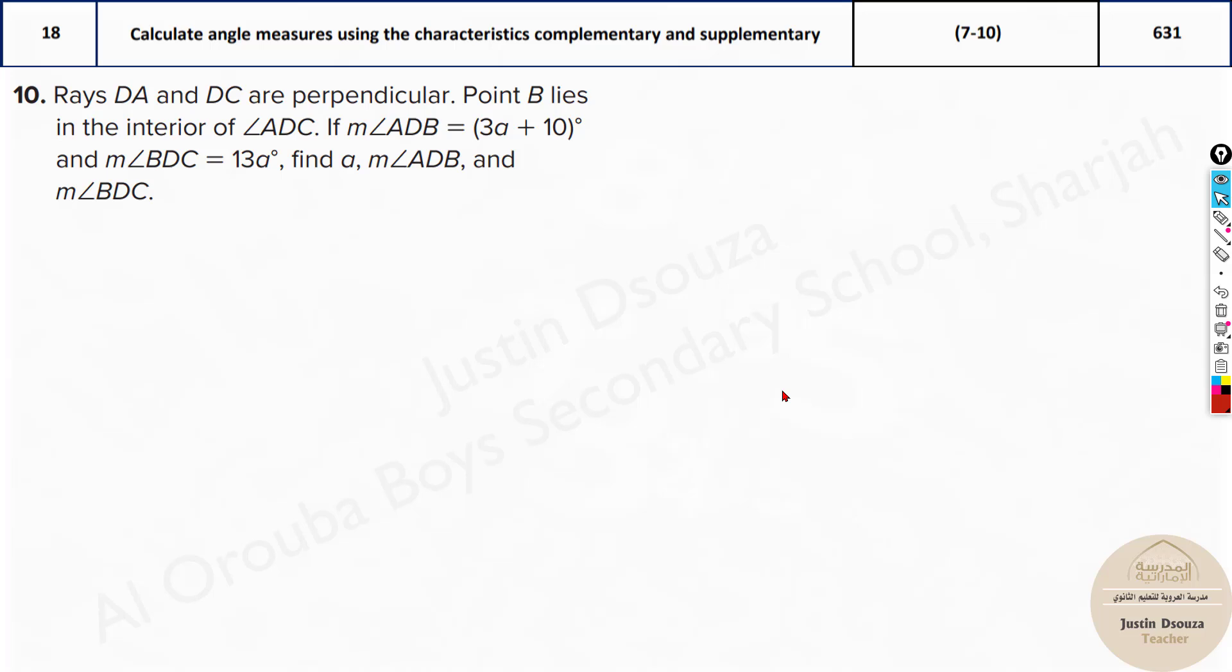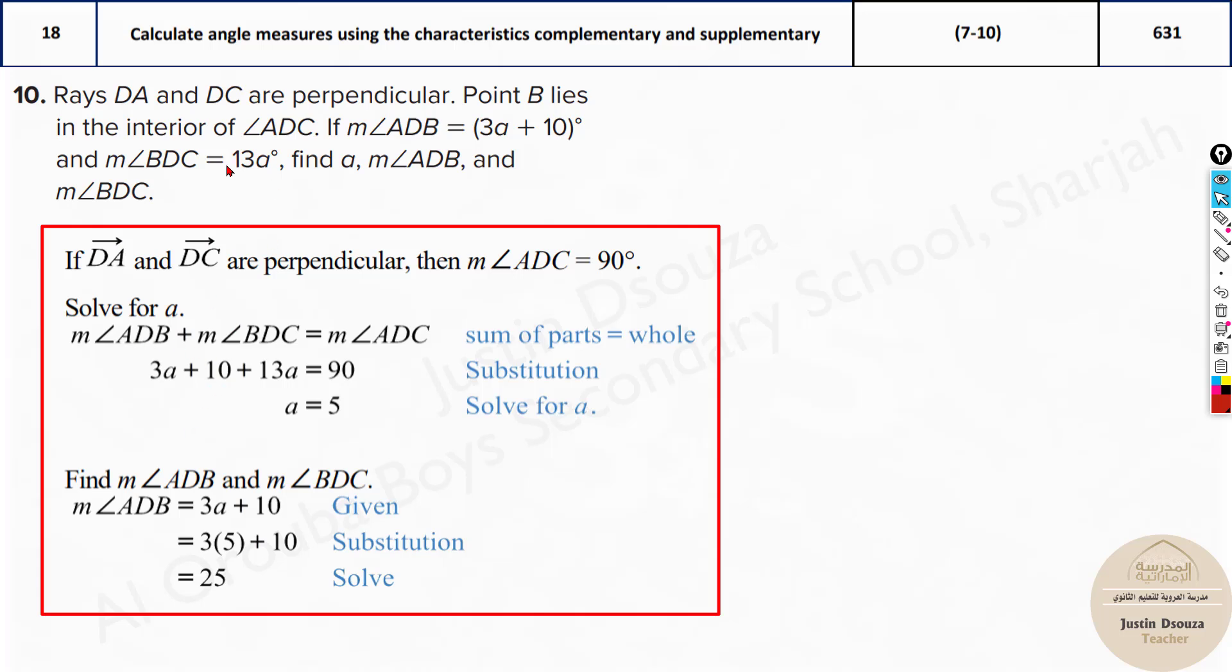Figure is given. It's very easy. And now this one is just like the first problem. They have told these both are perpendicular and the point is lying in the interior. So here they have given you ADB and BDC. I'll just draw the figure if you're getting confused. So DA and DC, if I have this as D, I'll take this as A and this as C. It must be perpendicular, exactly 90 degrees. And there's a point B lying in between. So imagine this is the point. And now over here we know ADB is 3a + 10 and BDC is 13a.